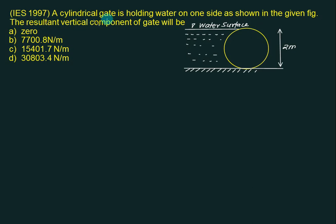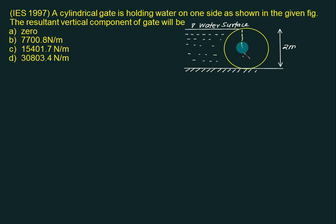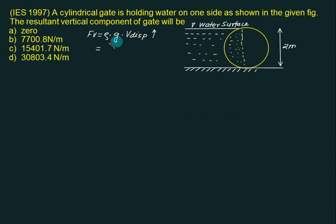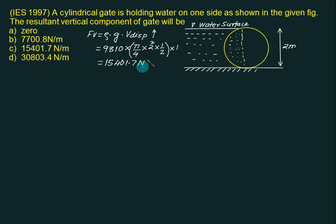For the third problem, a cylindrical gate holds water on one side only and we want to calculate only the vertical force. If there were no gate, the column would be filled with liquid. When the gate is placed, that semi-circular volume is displaced. This is case number 3 — we apply the buoyant force concept: FV = ρg × V displaced = 9810 × (1/2 × π/4 × 2²) × 1 = 15,417 N per meter. So choice C is correct.